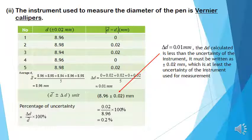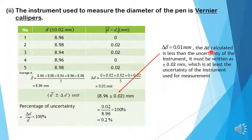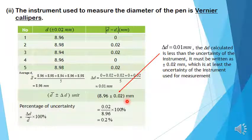Roman 2. State the instrument used to measure the diameter of the pen, which is the vernier calipers. Then calculate for the average diameter, which is 8.96 mm. Complete this column by calculating the modulus difference between the average diameter and each measurement reading recorded. Sum up these values and divide by 5 to get the uncertainty, which is 0.01 mm. The delta D calculated is less than the uncertainty of the instrument, so it must be written as ± 0.02 mm, which is at least the uncertainty of the instrument used for measurement. Therefore, the diameter of the pen is recorded as 8.96 ± 0.02 mm.